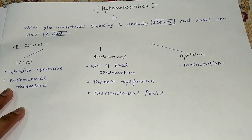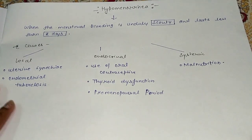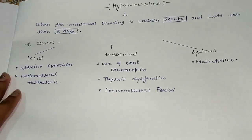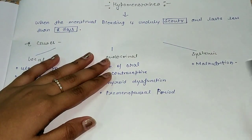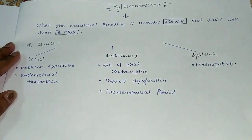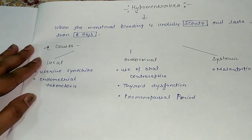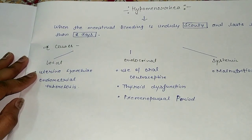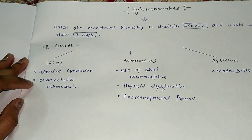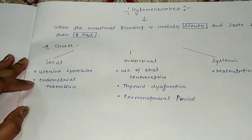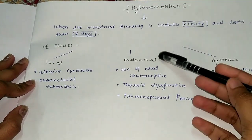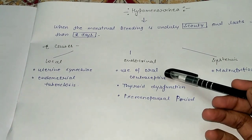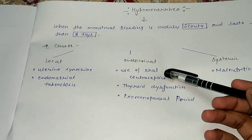The causes of hypomenorrhea: the first is local causes, the second is endocrinal causes, and the third is systemic causes. Local causes include uterine synechiae and endometrial tuberculosis, both of which can lead to hypomenorrhea.